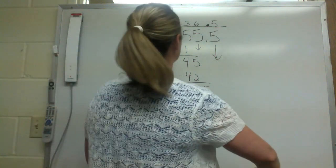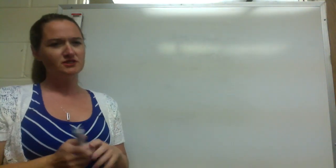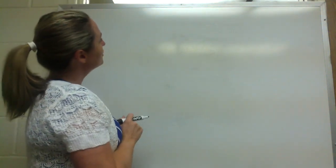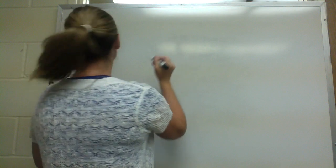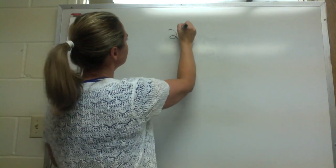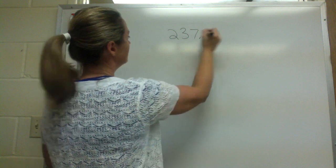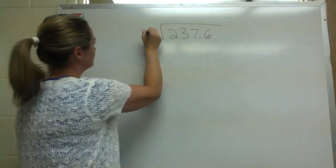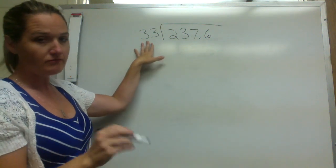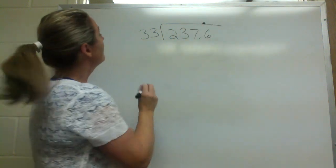All right, let's work out a few more — we're actually going to work out quite a few decimal division problems, just because there are a few situations you might encounter. So let's do another pretty straightforward one from the book: 237.6 divided by 33. Again, no decimals in the divisor — there's a decimal in the dividend, so we're just going to bring it straight up, so it's already in our answer.